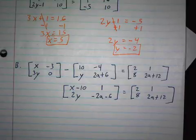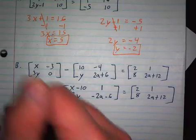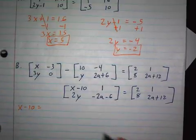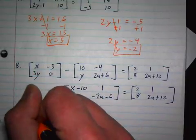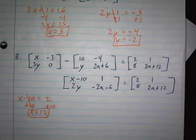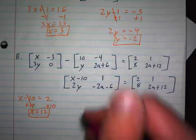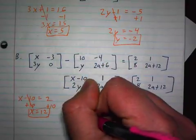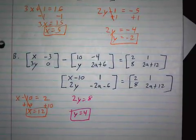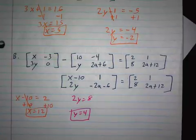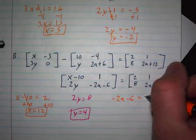So what do I know about x? I know that x minus 10 equals 2. That's easy — that would mean x is 12, right? For y, what do I know about y? 2y equals 8, so divide by 2, y is 4. And what do I know about a? I know that negative 2a minus 6 equals 2a plus 12, right?